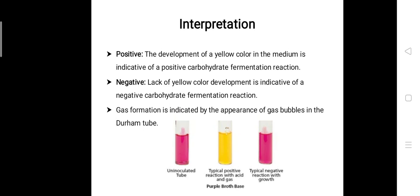In summary, the sugar utilization test or carbohydrate fermentation test has two types of interpretation: one based on acid production and one based on gas production. For acid production, a positive result shows yellow color development in the medium, while negative shows no yellow color. For gas production, a positive result shows a bubble inside the inverted Durham tube, while negative shows no bubble in the Durham tube.